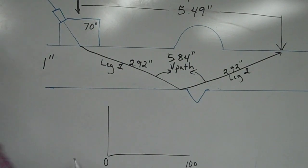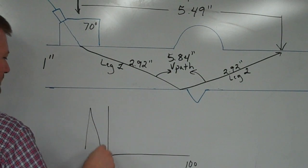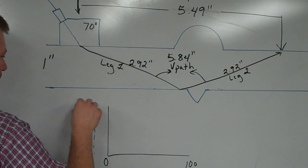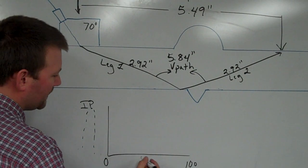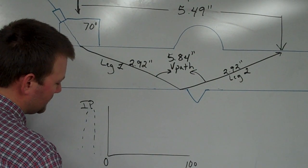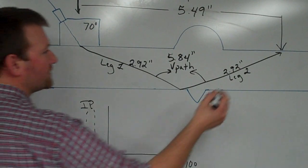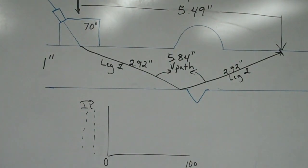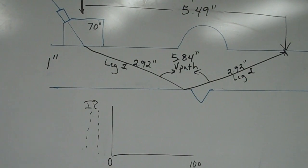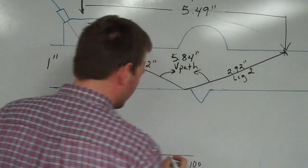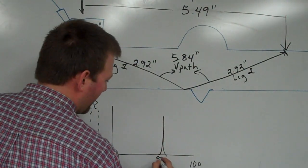Both of those added together is going to give us a 5.84 V-path. Meaning sound came out of the transducer, followed itself down, or made its path down, hits the bottom of the plate and bounces, and comes back up to the surface again. That all happens within 5.84 inches.